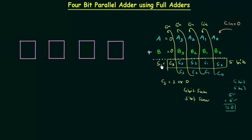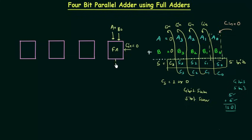Now let's implement this using full adders. Consider the addition of the first two bits A0 and B0. These are the two input bits, and the carry input from the previous sum is equal to 0. S0 is the sum for the first addition and C0 is the carry output from this first full adder.